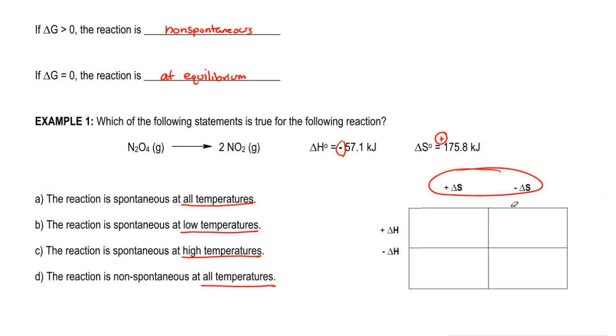When both delta H and delta S are positive, then our reaction is spontaneous at high temperatures. If delta H is positive and delta S is negative, then it's non-spontaneous at all temperatures.